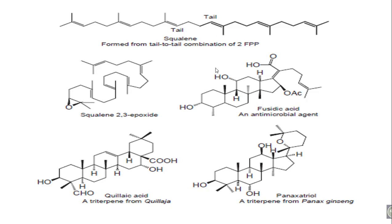Structurally, triterpenoids can be categorized by their tail-to-tail connection, constituting six isoprene molecules with 30 carbon atoms. Squalene is formed from the tail-to-tail combination of two farnesyl pyrophosphate molecules. Squalene 2,3-epoxide is shown structurally, and phosidic acid — the antimicrobial and antifungal drug — is synthesized from Phosidium ocelium plant.